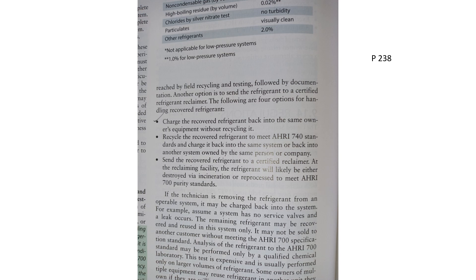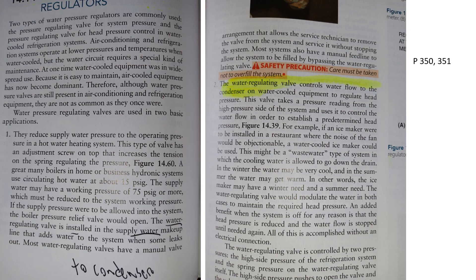On page 238, we try to recover and reuse as much refrigerant as possible, but you can't take refrigerant from one piece of equipment and put it in another — with one exception. The first bullet states: you can charge recovered refrigerant back into the same equipment without recycling it. Not a similar model, not the same manufacturer's other unit — that specific piece of equipment only. This is very important.